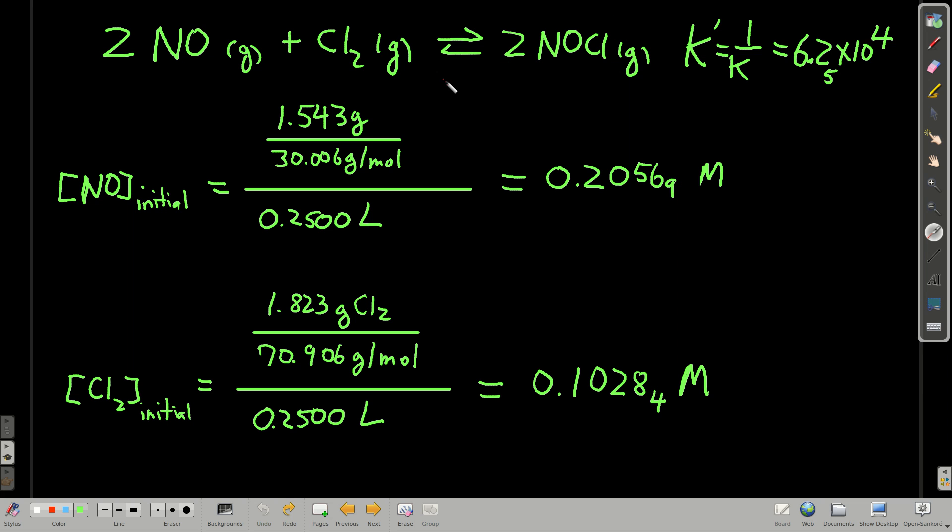And then, okay, so because we reversed the reaction, we took 1 over k to get the k for this, for the reaction written this way, and now that's a pretty big number.